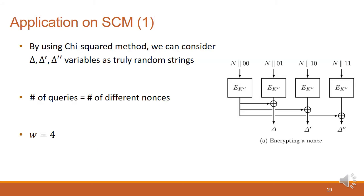I will introduce how the security of SCM could be derived by the randomness of XORP. Let us first focus on the mask generation. In mask generation function, we directly applied XORP structure, so we can consider delta, delta prime, and delta double prime as truly random strings. Note that the number of queries in this structure are equal to the number of different nonces in the authenticated encryption, and W is equal to 4 at this moment.